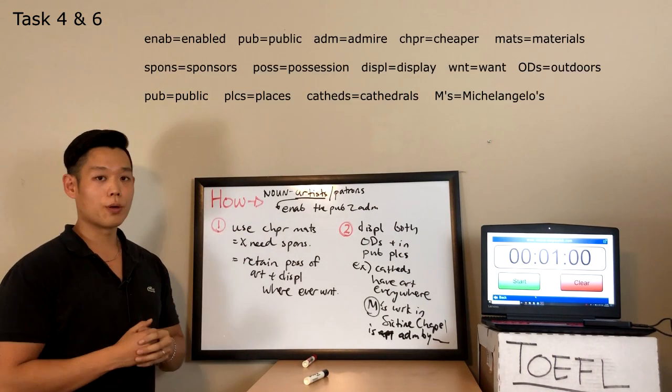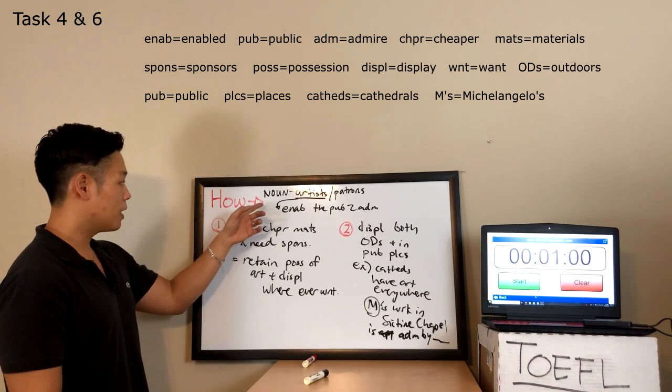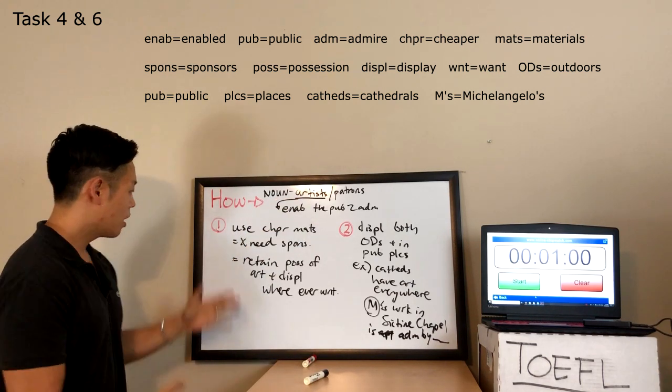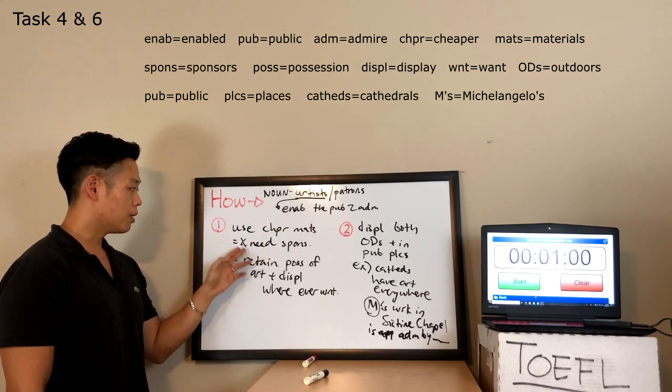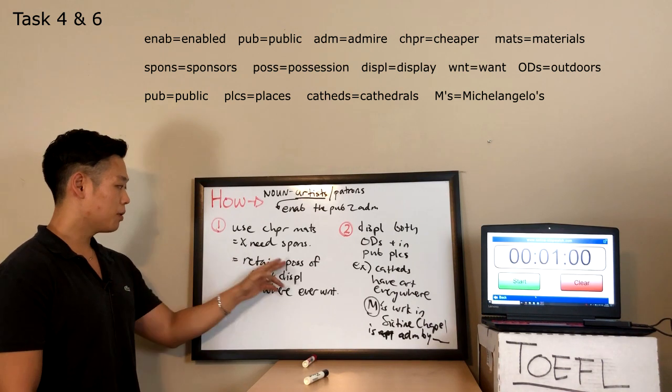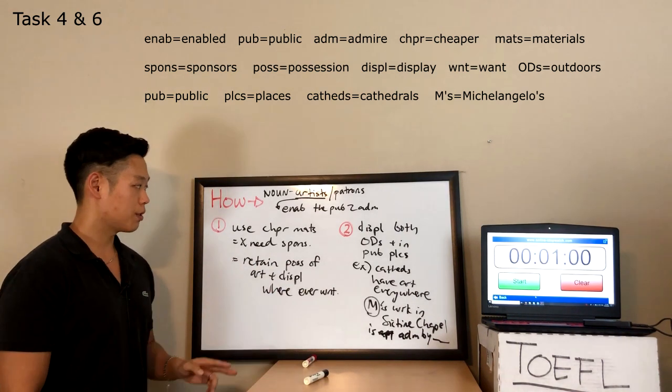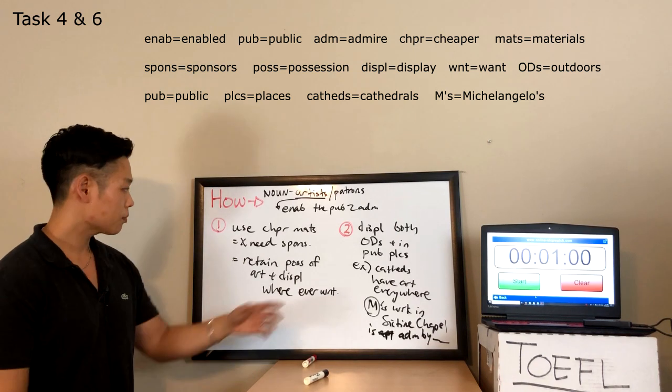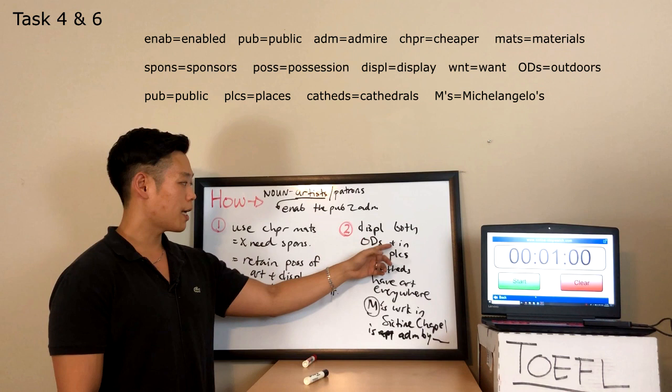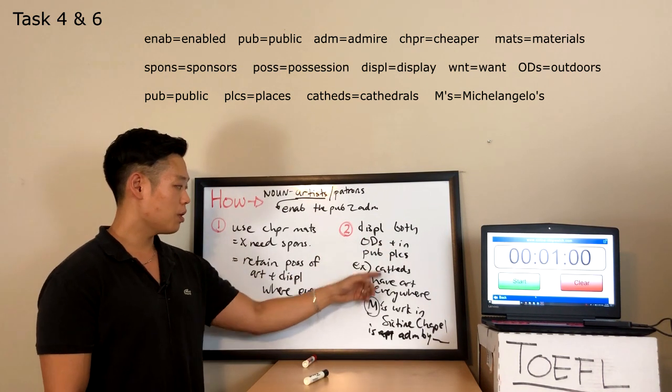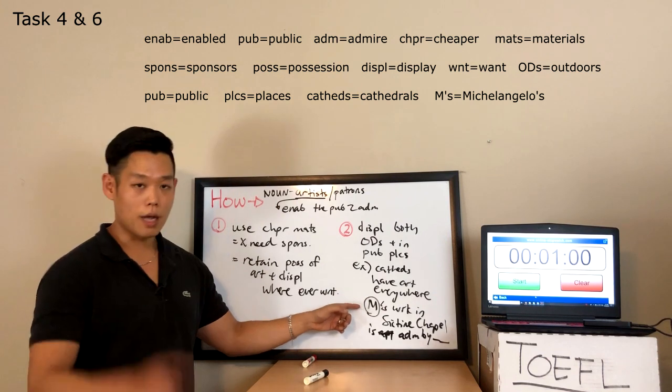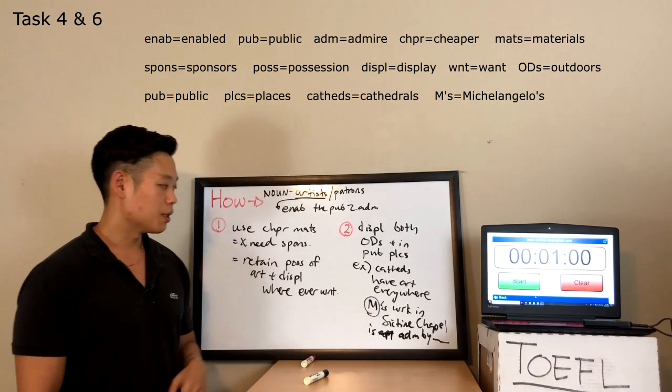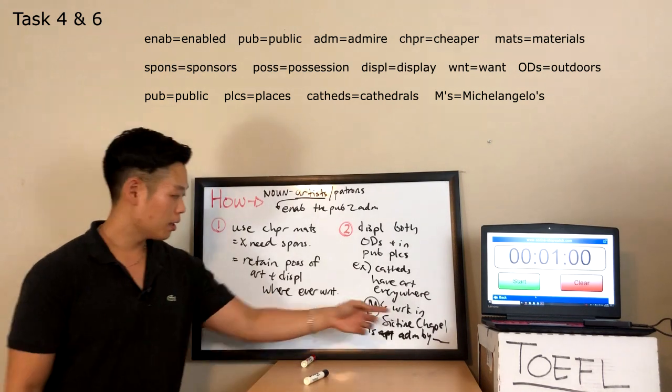I've determined that the most important noun is artists, but I'm going to add in the past. So the beginning and ending sentences are how artists in the past enabled the public to admire their work. Now, the first section says, use cheaper materials, so did not need sponsors. So retain possession of art and display wherever you want. It's fairly short. I'm going to take my sweet time and I'm going to try to use longer transitional phrases. Now, the second section says, display both outdoors and in public places. For example, cathedrals have art everywhere. Michelangelo's, so M circle means Michelangelo in this context. Michelangelo's work in the Sistine Chapel is admired by countless people in today's world. That's what I'm going to say over here.